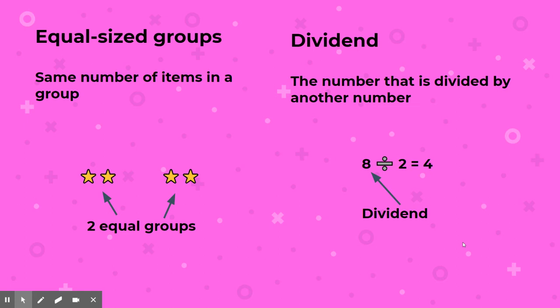The number that is divided by another number is called the dividend. The dividend in 8 divided by 2 equals 4 is 8. For right now, it's usually going to be the largest number.